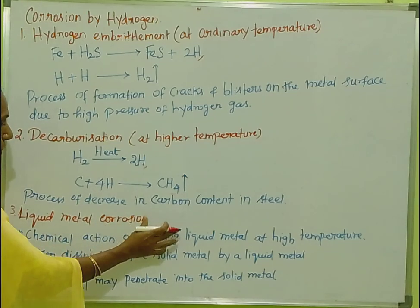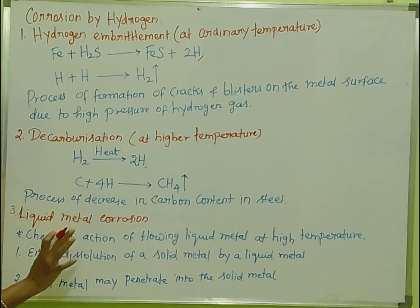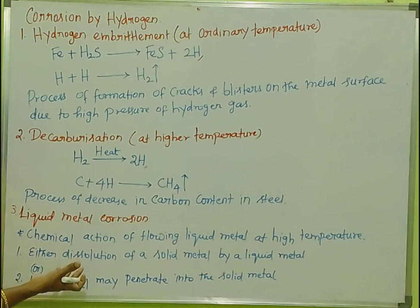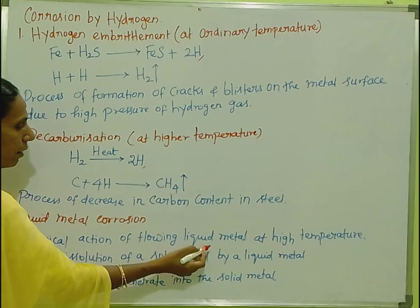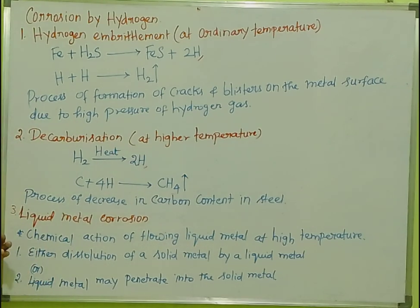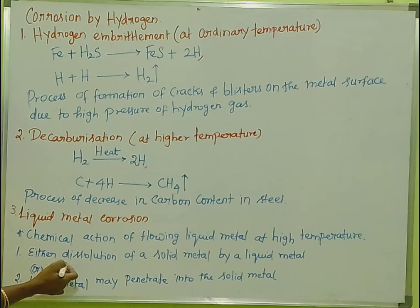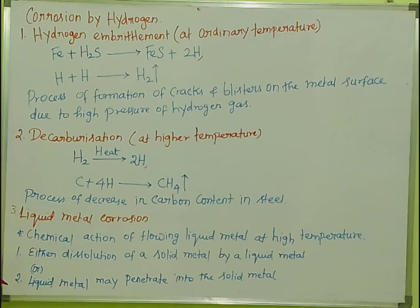Liquid metal corrosion involves the dissolution of a solid metal by a liquid metal. There is a solid metal and a liquid metal — the liquid metal will penetrate into the solid metal. This penetration is how liquid metal corrosion works.